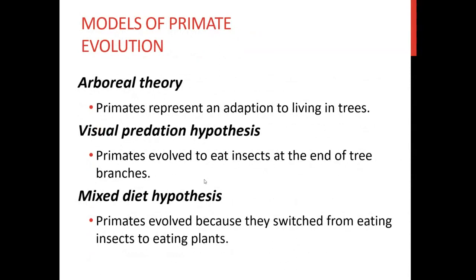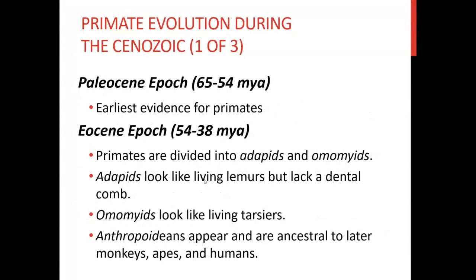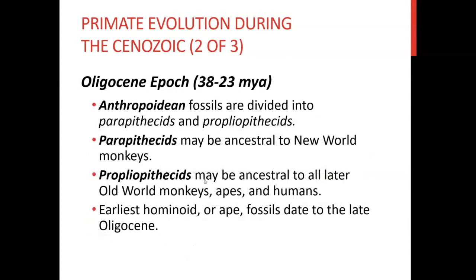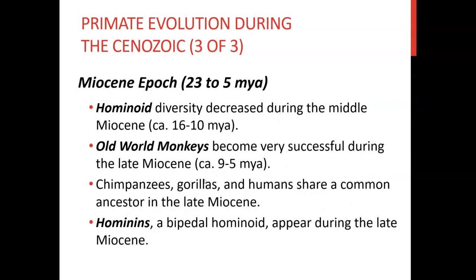Primate evolution through the Cenozoic: Paleocene epoch (65–54 million years ago) — the ancestor of primates. Eocene epoch (54–38 million years ago) — primates divided into adapids and omomyids; adapids look like living lemurs but lack a dental comb; omomyids look like living tarsiers; anthropoideans appear and are ancestral to later monkeys, apes, and humans. Oligocene epoch (38–33 million years ago) — anthropoidean fossils divided into parapithecids and propliopithecids; the former may be ancestral to New World monkeys and the latter to Old World monkeys, apes, and humans; earliest hominoid fossils date to the Oligocene. Miocene epoch (23–5 million years ago) — hominoid diversity decreased during the middle Miocene; Old World monkeys became very successful in the late Miocene; chimpanzees, gorillas, and humans share a common ancestor in the late Miocene; and hominins, a bipedal hominoid, appear during the late Miocene.